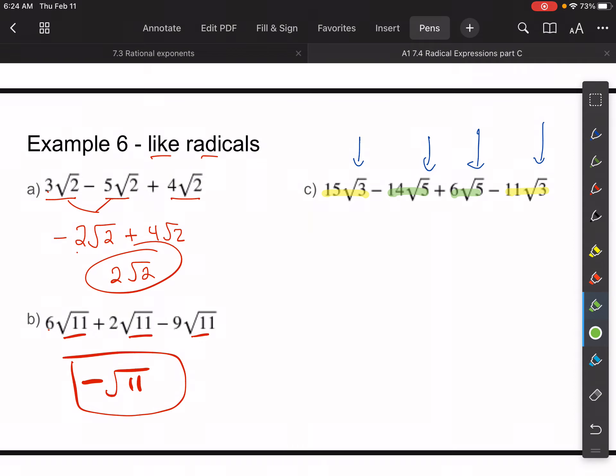So let's do this. 15√3 - 11√3 gives me 4√3. Those are done. And then -14, make sure that sign stays with that 14. -14 + 6 would give me -8√5. So I have 4√3 - 8√5. And I'm done with that one. I can't combine that any further.